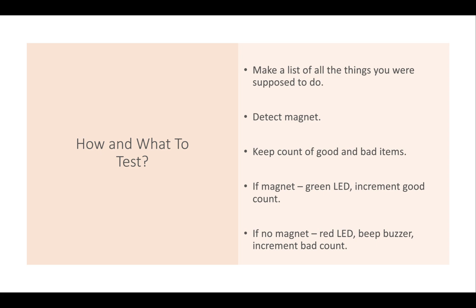For example: detect the magnet, keep count of good and bad items. If a magnet is detected, turn the green LED on and increment the good count. If no magnet, turn the red LED on, beep the buzzer, and increment the bad count. I didn't do the stepper motor section — you should probably do that if you get a question like this. In this example, the stepper motor should flick left if no magnet is detected (bad item goes to bin) and move right if a magnet is detected (good item).